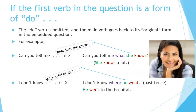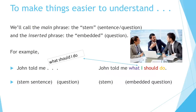To make things easier to understand, we'll call the main phrase the stem sentence or question, and the inserted phrase the embedded question. For example, 'John told me' is the stem sentence; 'What should I do?' is the question. Combined: 'John told me what I should do' — that is the embedded question. The stem sentence or question can control the tense of the embedded question.